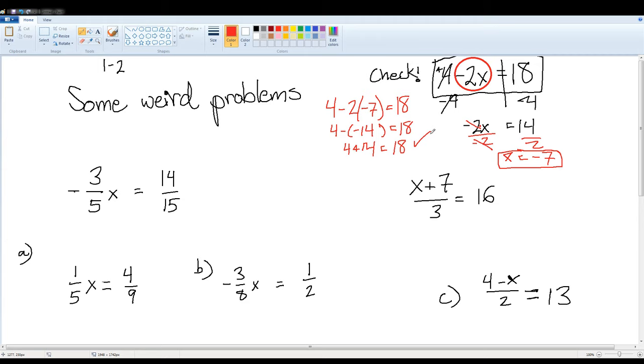Check. Okay, so here are some weird problems. I want to cover these because these are usually where kids get stumped. First tactic is this: if you see a fraction in front of an x to undo that, if this is your last step and you need to undo it, this is saying negative three-fifths of x.